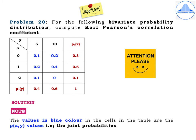Problem 20: this is a 10-marker. For the following bivariate probability distribution, compute Karl Pearson's correlation coefficient. Please be very careful — it looks similar to a bivariate distribution problem, but this is a bivariate probability distribution, so read the words carefully. In the table the y values are 5 and 10, and the x values are 0, 1, and 2. The joint probabilities shown in blue are 0.1, 0.2, 0.2, 0.4, 0.1, and 0, which are the bivariate probabilities p of x comma y.